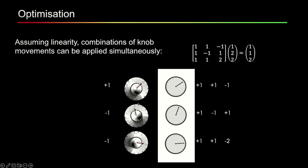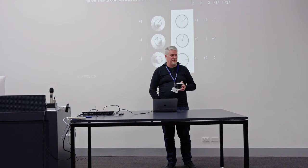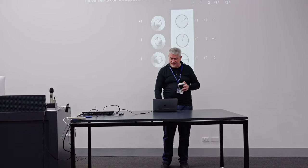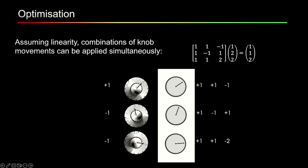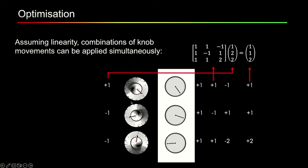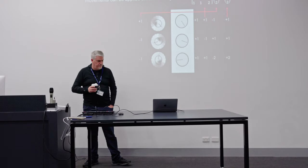So I'm going to do plus one to this dial, minus one to this dial, and minus one to this dial, and I should get the corresponding combination of effects in the outputs. This matrix of partial derivatives times the knob adjustments gives me the output changes. I can move the knobs and the outputs move accordingly. That's a very general situation.